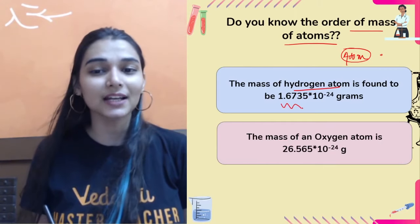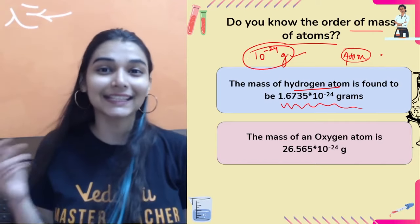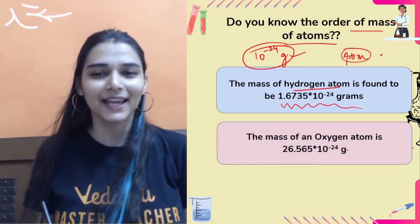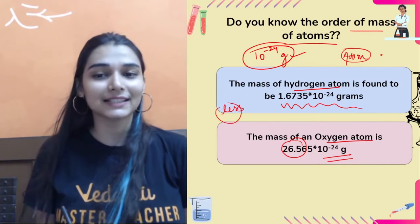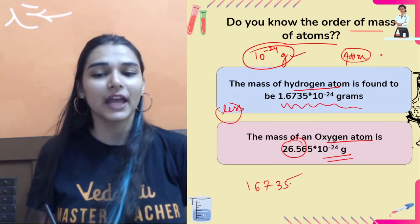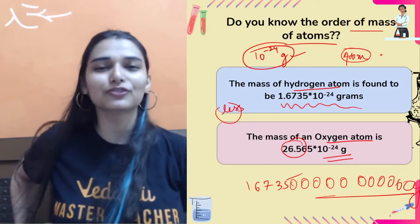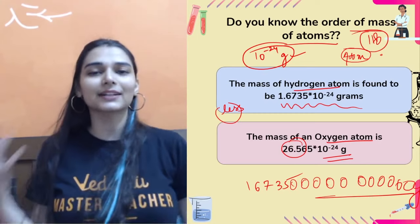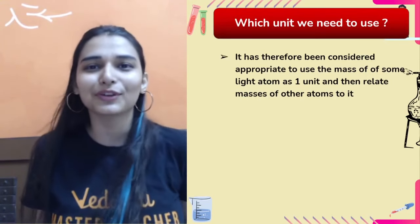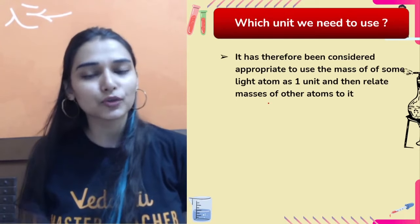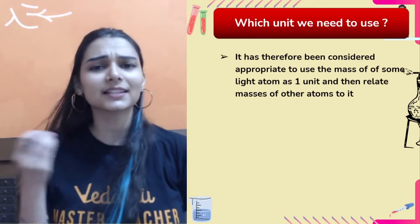The mass of a hydrogen atom is around 1.67 × 10⁻²⁴ grams, and for oxygen it's 26.5 × 10⁻²⁴ grams. Mass of atoms is extremely tiny — if you write it out, you'd need 20+ zeros. We cannot remember such values for 118 elements. So instead of using actual mass in grams, we need a new unit with a reference element.